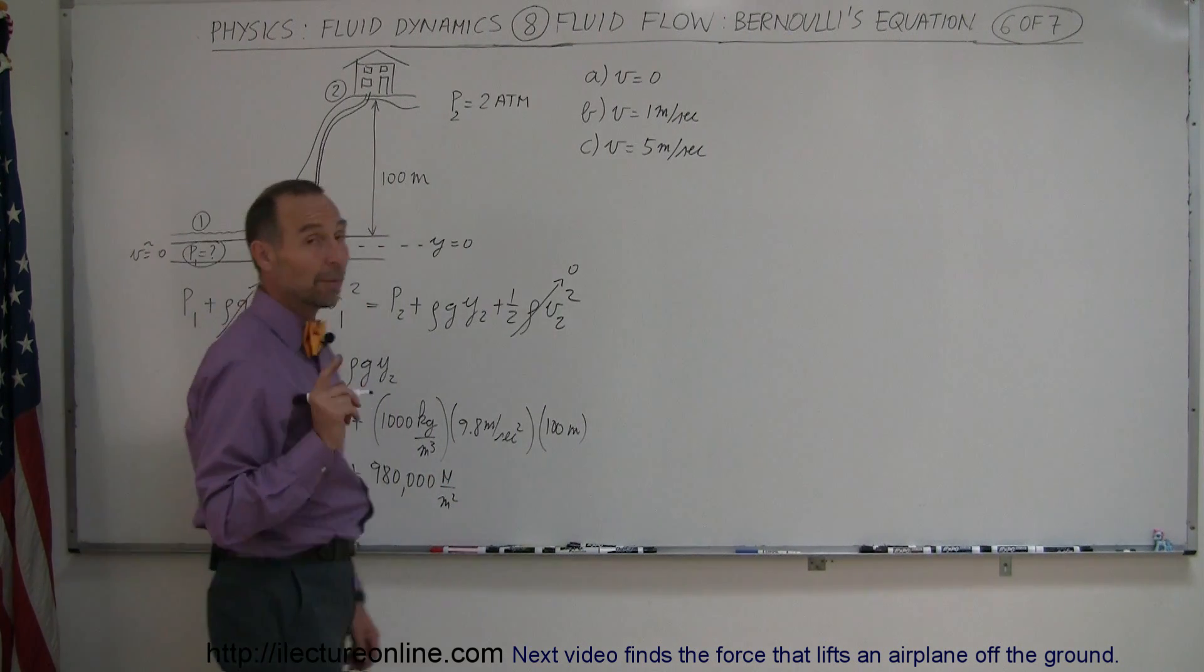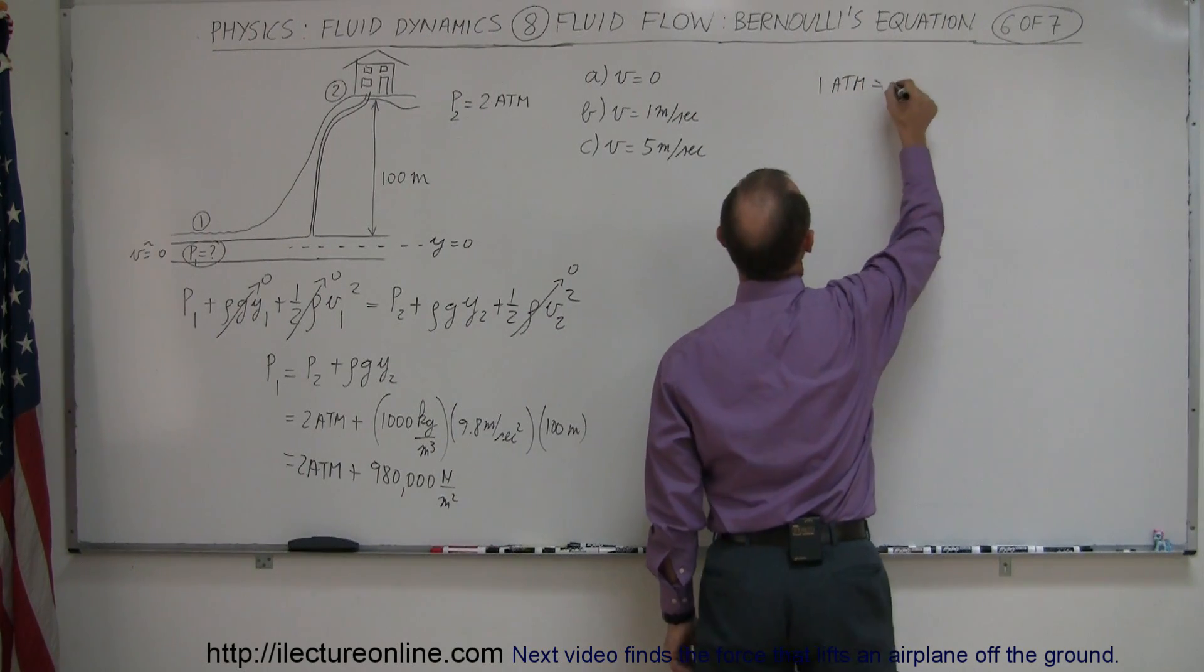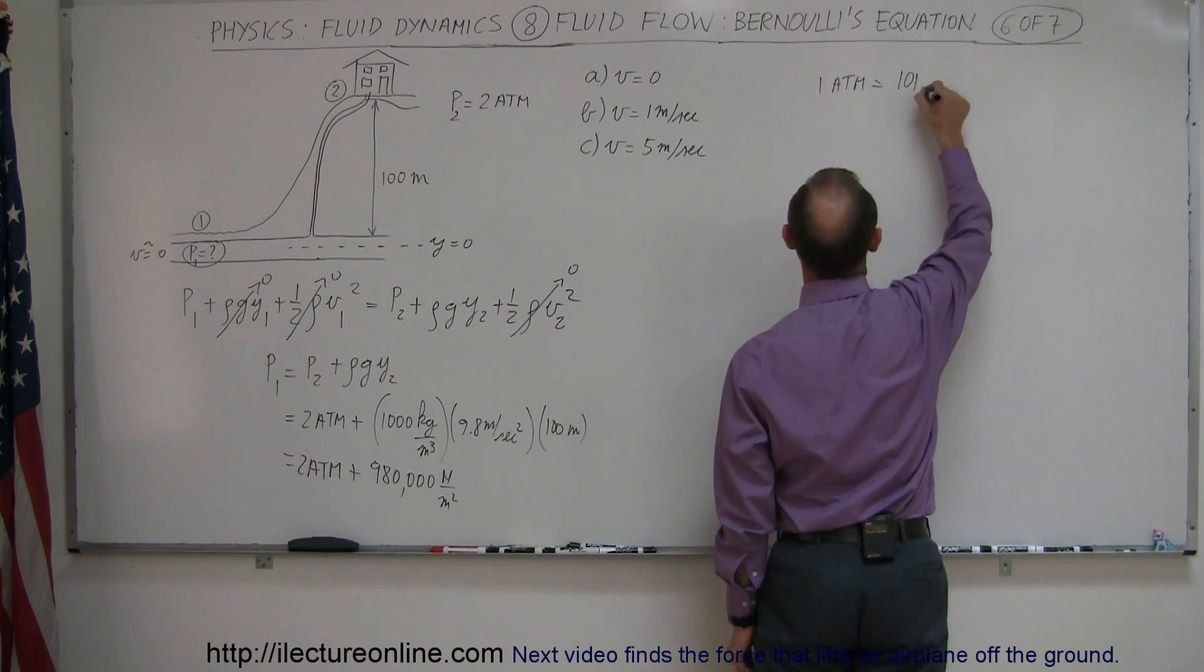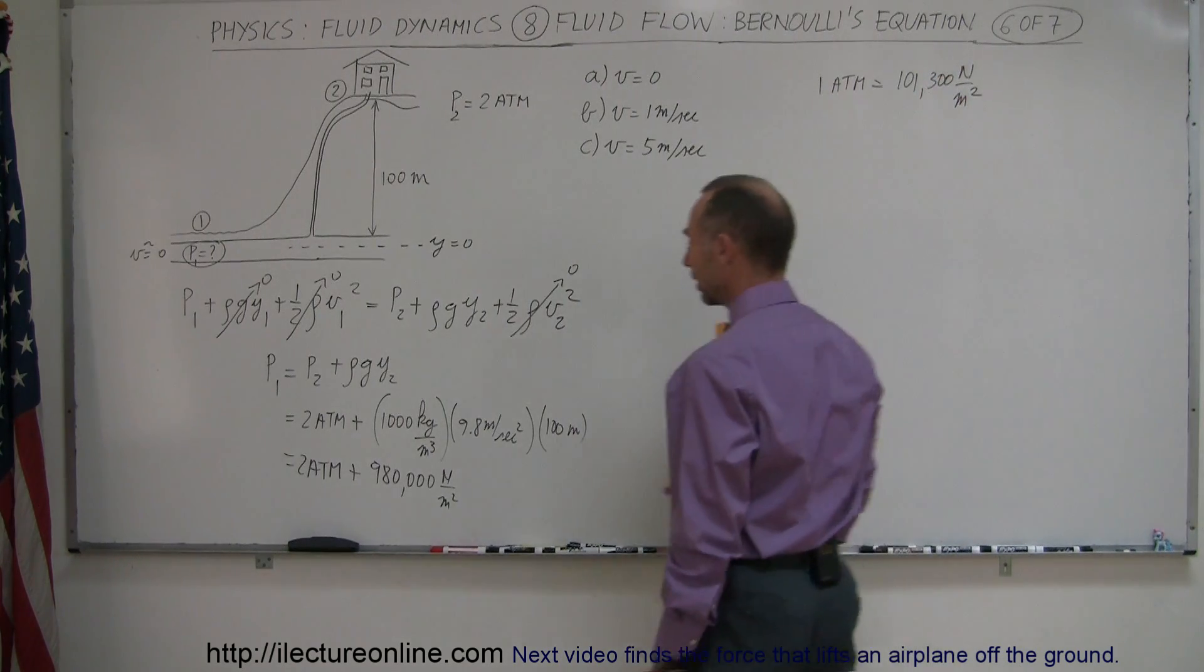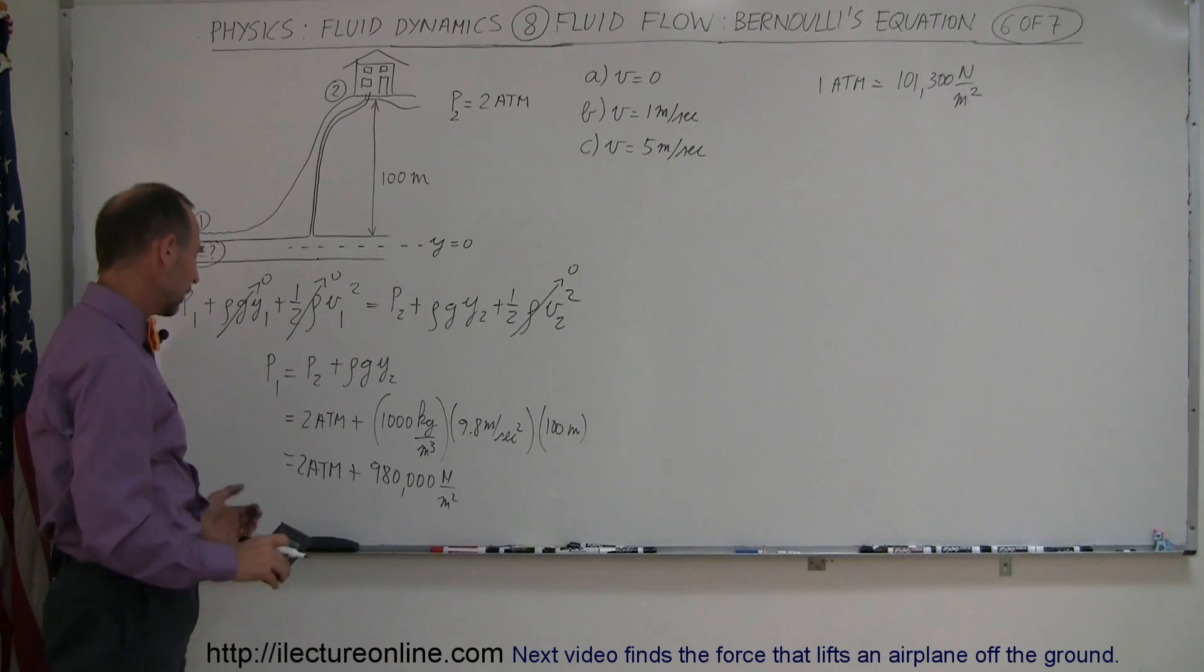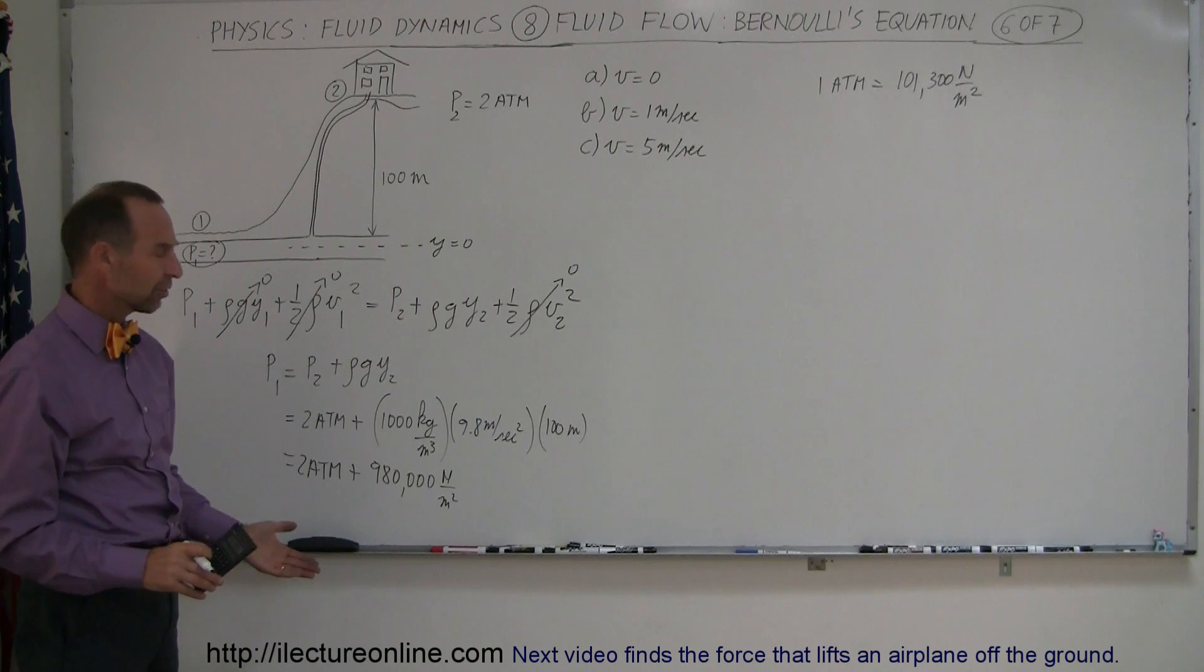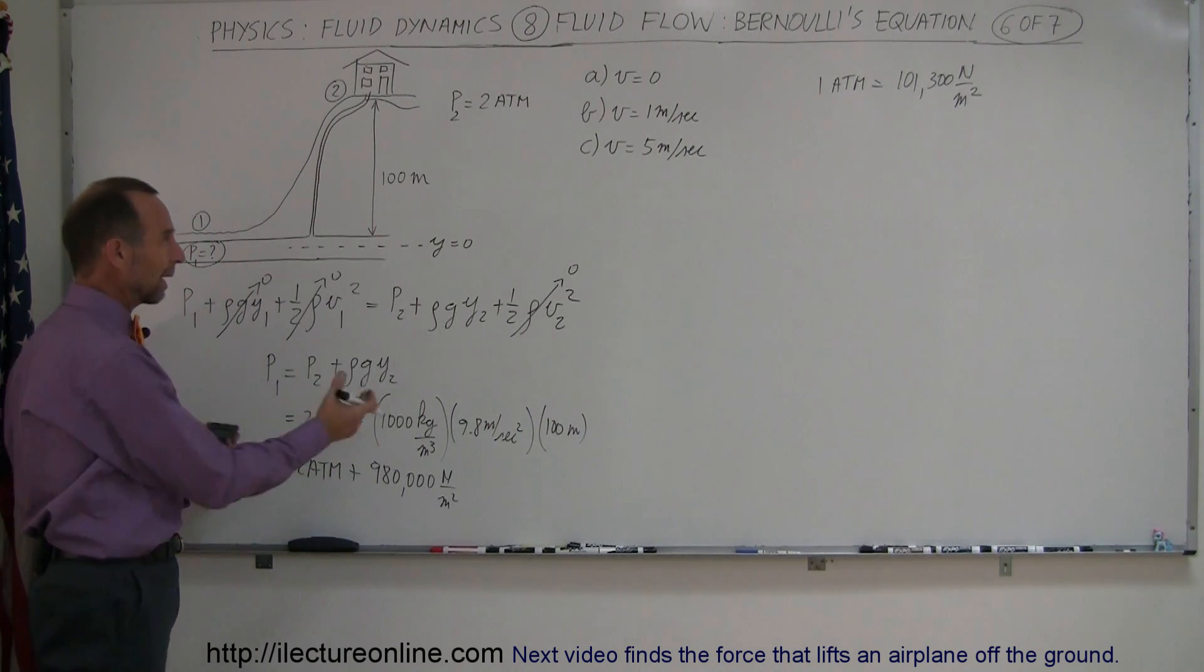And of course, if we remember that one atmosphere is equal to 101,300 newtons per square meter, you can see that this is almost 10 atmospheres. All right, so now we can either express this in terms of atmospheres, or we can express this in terms of newtons per square meter. So let's just convert it to atmospheres, gives us smaller numbers.